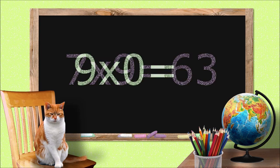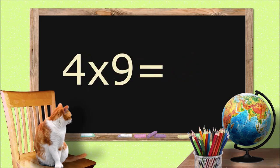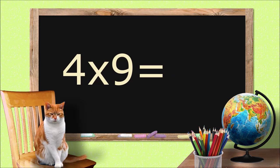9 times 0 equals 0. 4 times 9 equals 36.